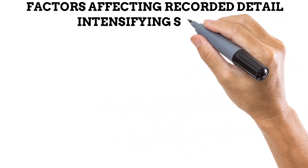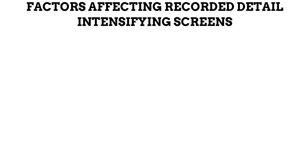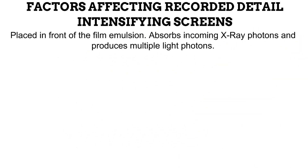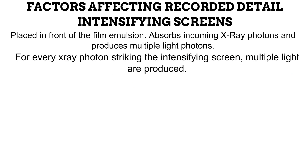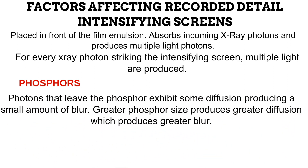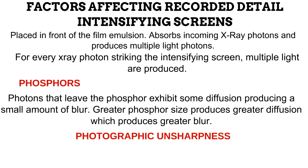The next factor affecting recorded detail is the use of intensifying screens — applicable only to film screen radiography. Intensifying screens absorb incoming X-ray photons and produce multiple light photons per X-ray photon. The component that performs this is the phosphor layer, which converts X-ray photons to a greater quantity of light photons to which the X-ray film is sensitive. This provides great radiographic density with little exposure. However, these phosphors exhibit diffusion — some generated light photons diffuse out, causing blur. Larger phosphor size, associated with high-speed intensifying screens, produces greater diffusion and thus greater blur, which is a form of photographic unsharpness.